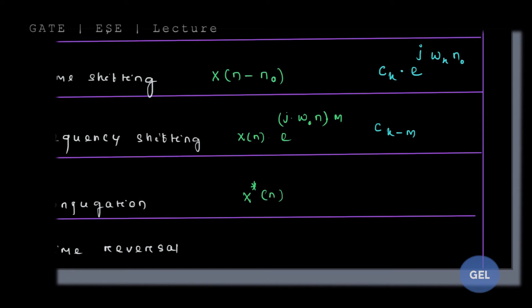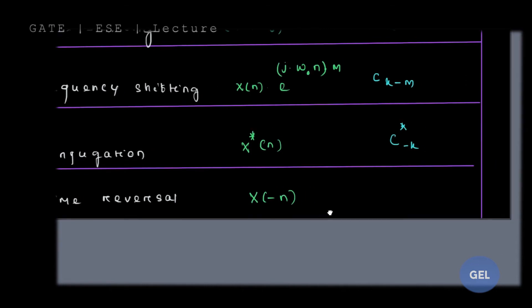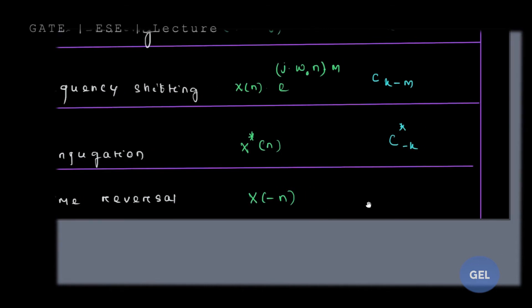For the conjugation property: if you replace x(n) by its conjugate value, then the subsequent Fourier series coefficient will be C*(-k), that is the conjugate of CK evaluated at −k. Similarly, for time reversal: x(−n) will affect the coefficient as C(−k).